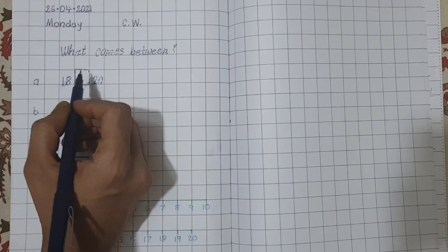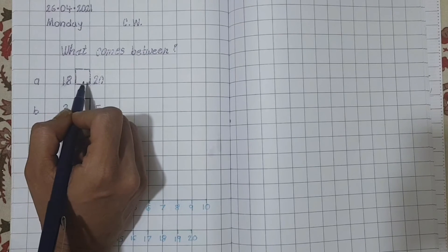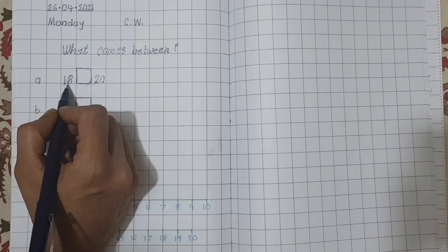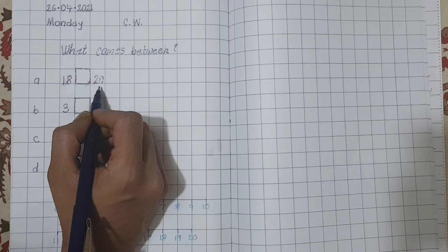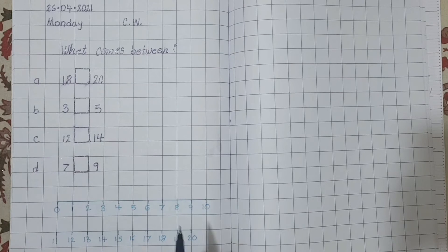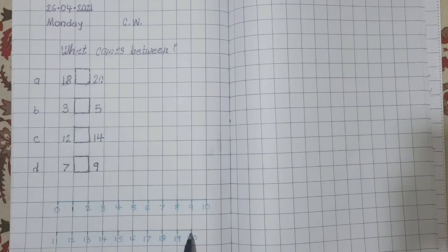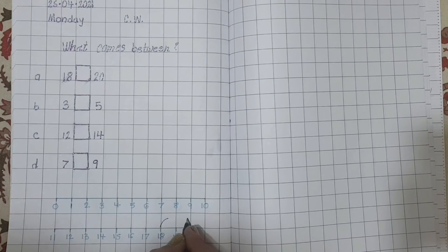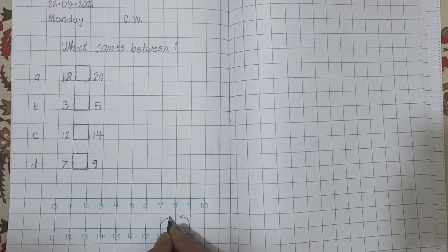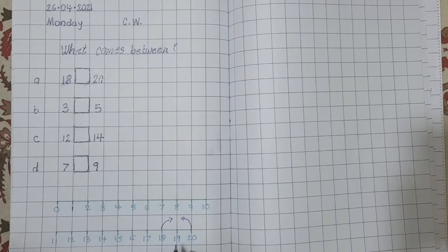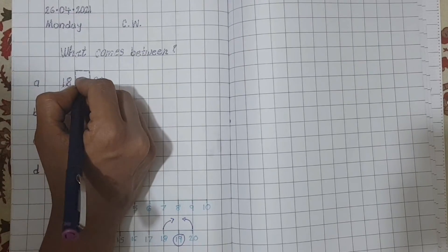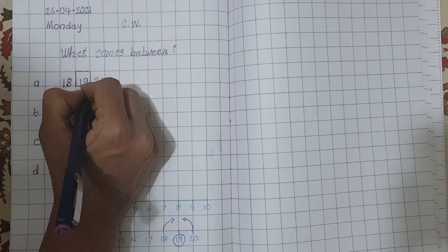As you can say empty block is between two numbers. So, we will write between numbers. Again, we will take the help of number line. So, let's start. Which number is this? 18. And this one? 20. So, where is number 18? Yes. And where is number 20? This is 18. And this is 20. So, what comes between 18 and 20? Right. 19. So, write 19.